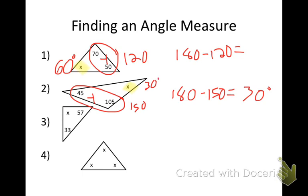Three. Quinn, what's the interior of a triangle add up to? So 57 plus 33 gives me 90. So what's X going to be, Quinn? 90. 180 minus 90 gets me 90 degrees.